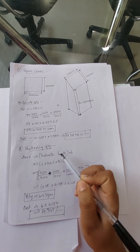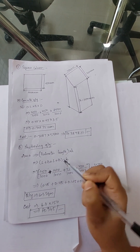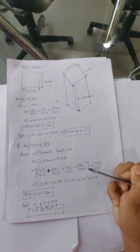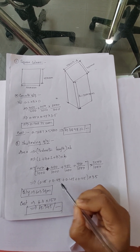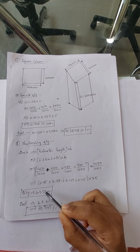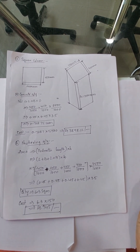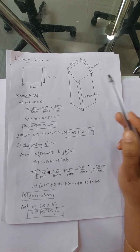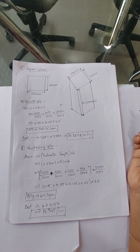To find the shuttering area for the square column: Area = Perimeter Length × Height. All four sides of the square are 450 mm each, so (0.45 + 0.45 + 0.45 + 0.45) × 3.5 = 0.45 × 4 × 3.5 = 6.3 square meters. At 150 rupees per square meter, the shuttering cost = rupees 945 for this square column. If you like this video, please like, share, and subscribe to Civil Engineering Knowledge World. Thank you.